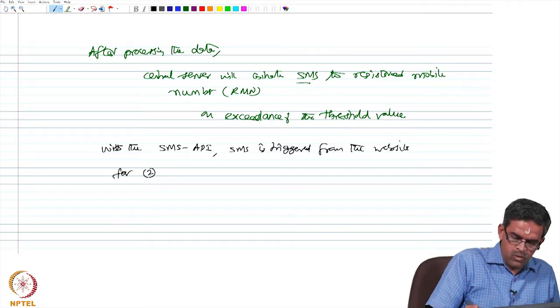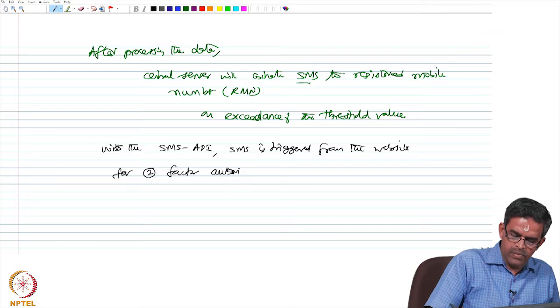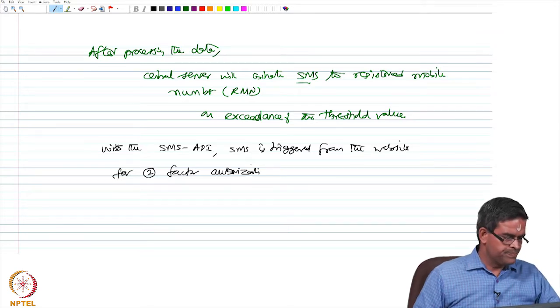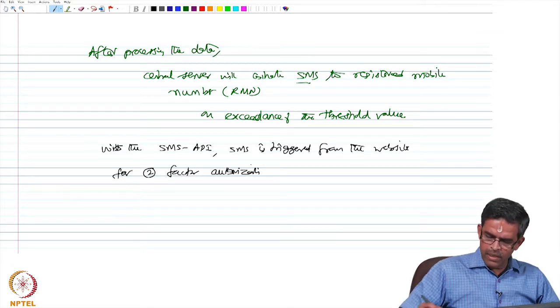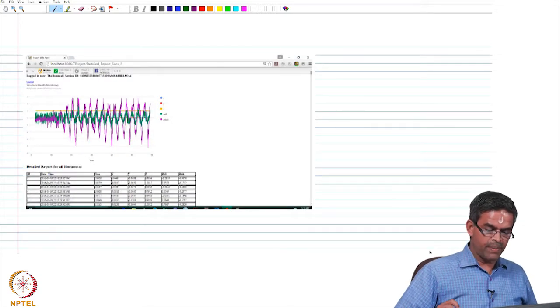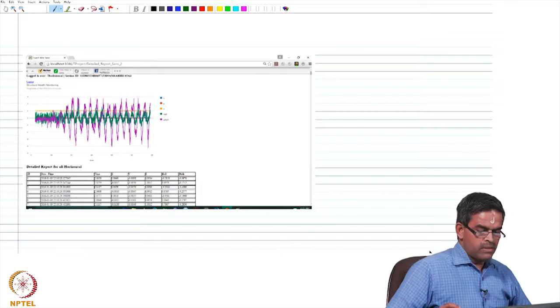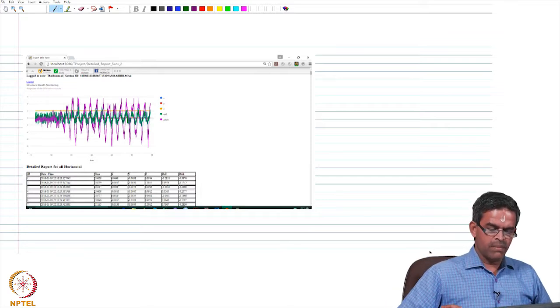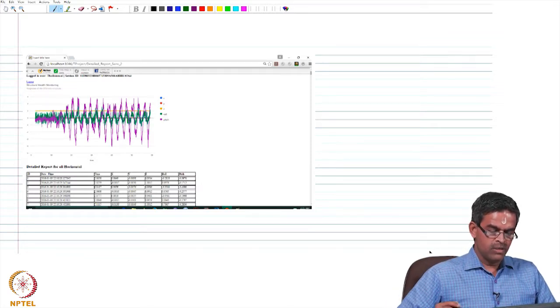For two factor authorization, typically you can see here how the SMS activation happens. This has been a real time measurement made during the conduct of the experiment.